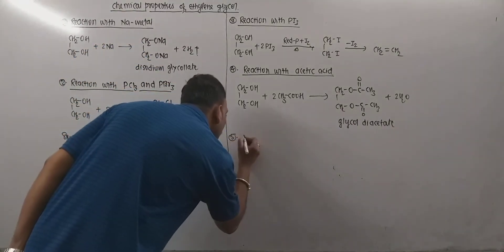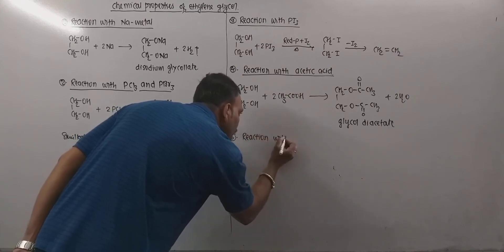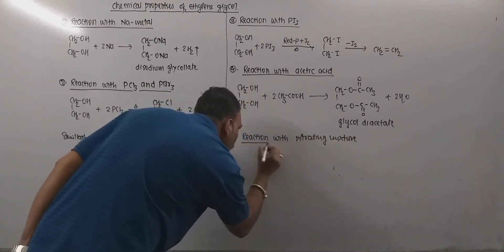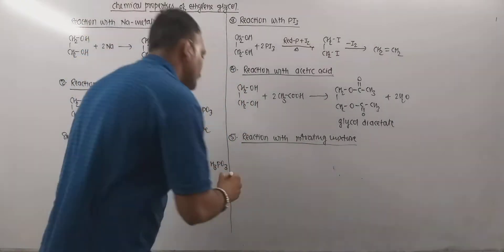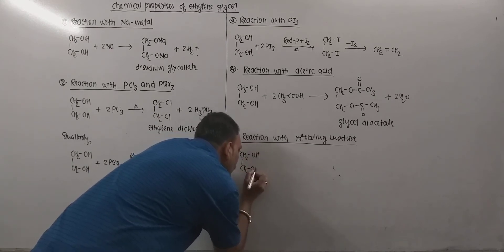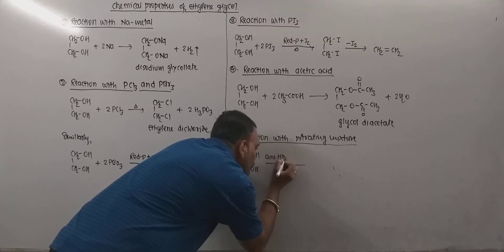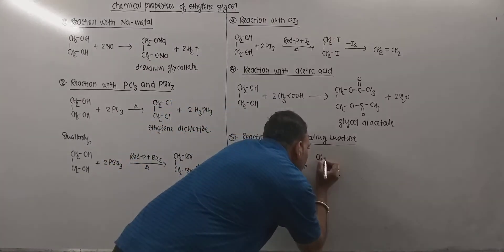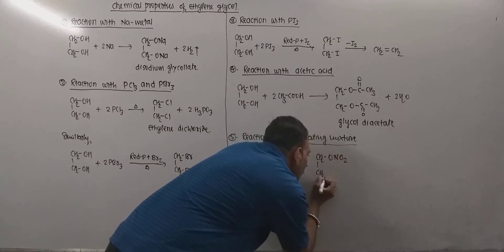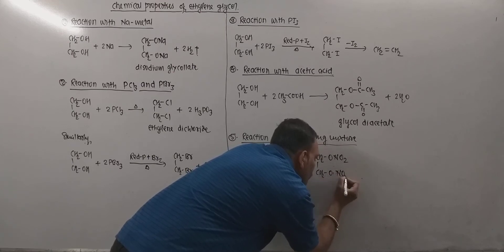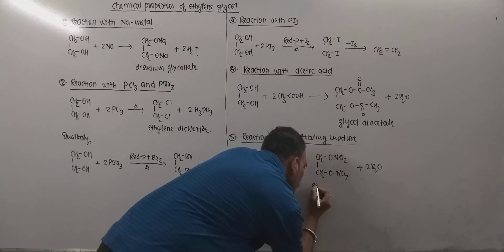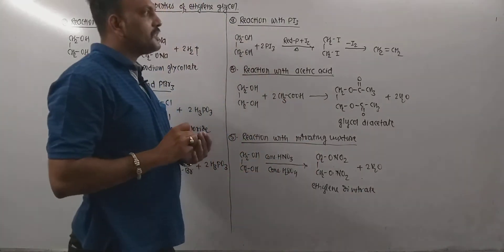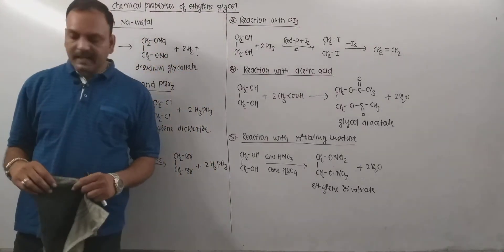The next important reaction is with nitrating mixture, which is a mixture of concentrated nitric acid and concentrated sulfuric acid. When ethylene glycol is heated with concentrated HNO₃ and concentrated H₂SO₄, nitration takes place and a product is formed with departure of water. This product is called ethylene dinitrate, and it is an explosive material.